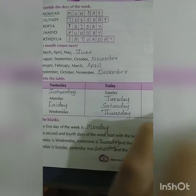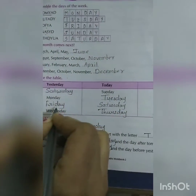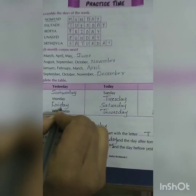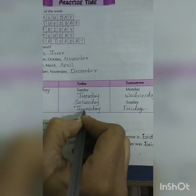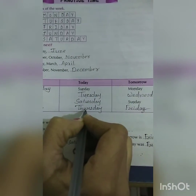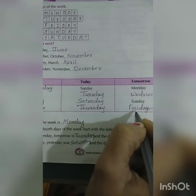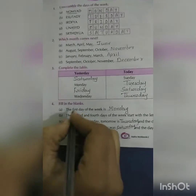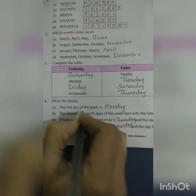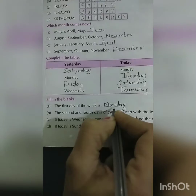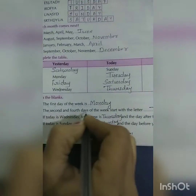If yesterday is Monday, then today is Tuesday and tomorrow is Wednesday. If tomorrow is Sunday, then today is Saturday and the previous day is Friday. If today is Wednesday, then tomorrow is Thursday.